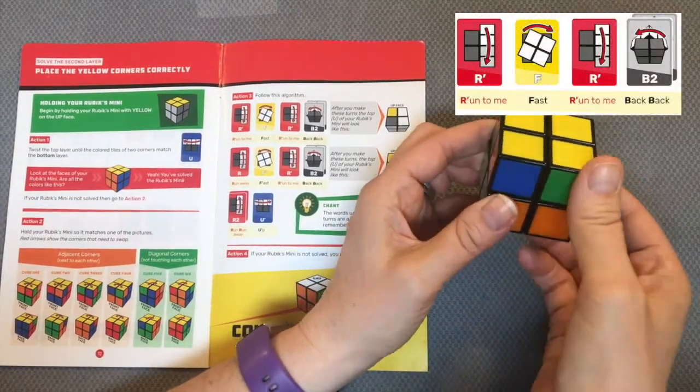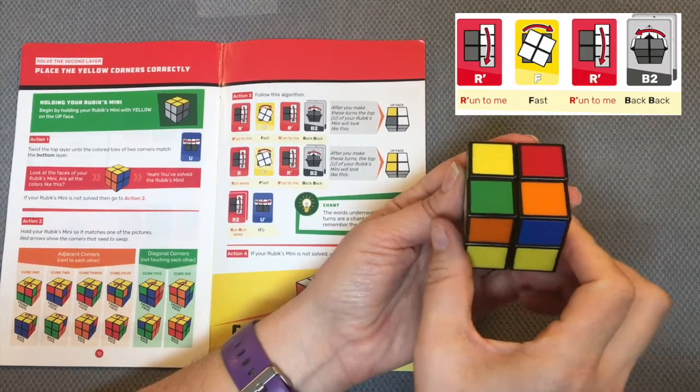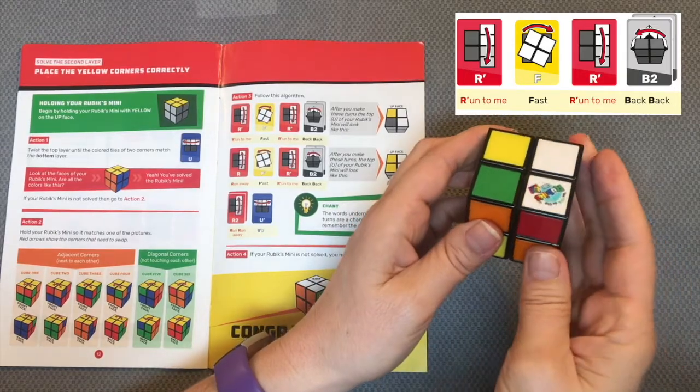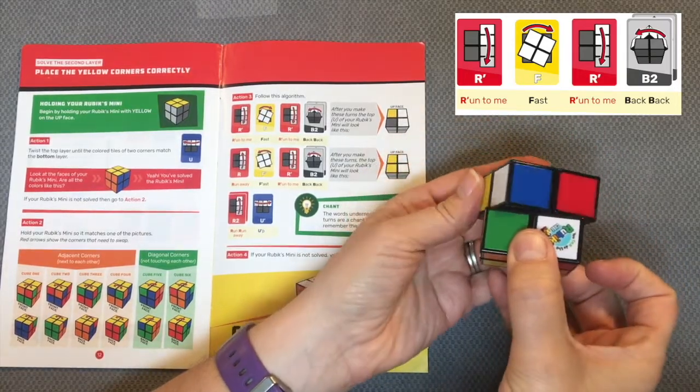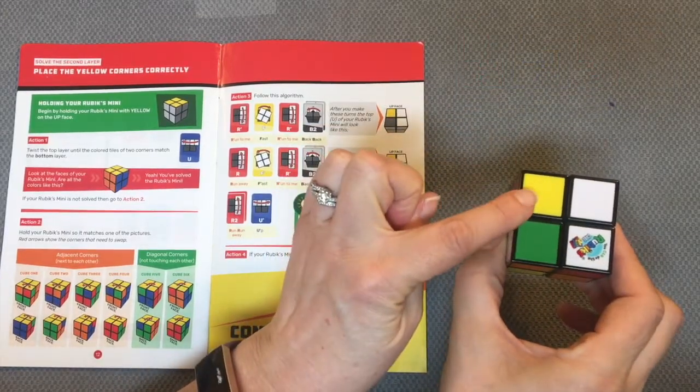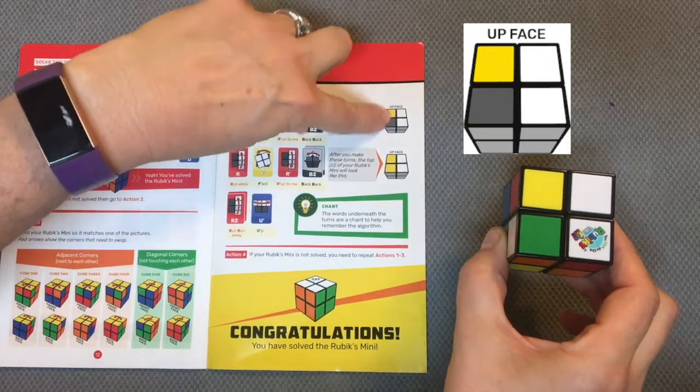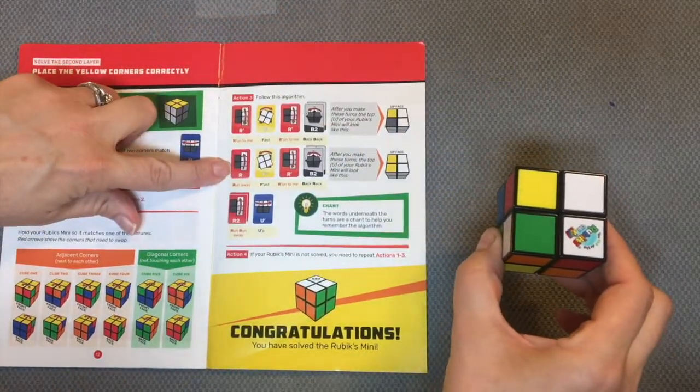So notice, run to me, which is right face down, fast right, which is the front, run to me, back back. That means back twice, one, two. And notice, just as a checkpoint, I have a yellow tile and I have a yellow tile, so I know I'm doing well, and the two white tiles.